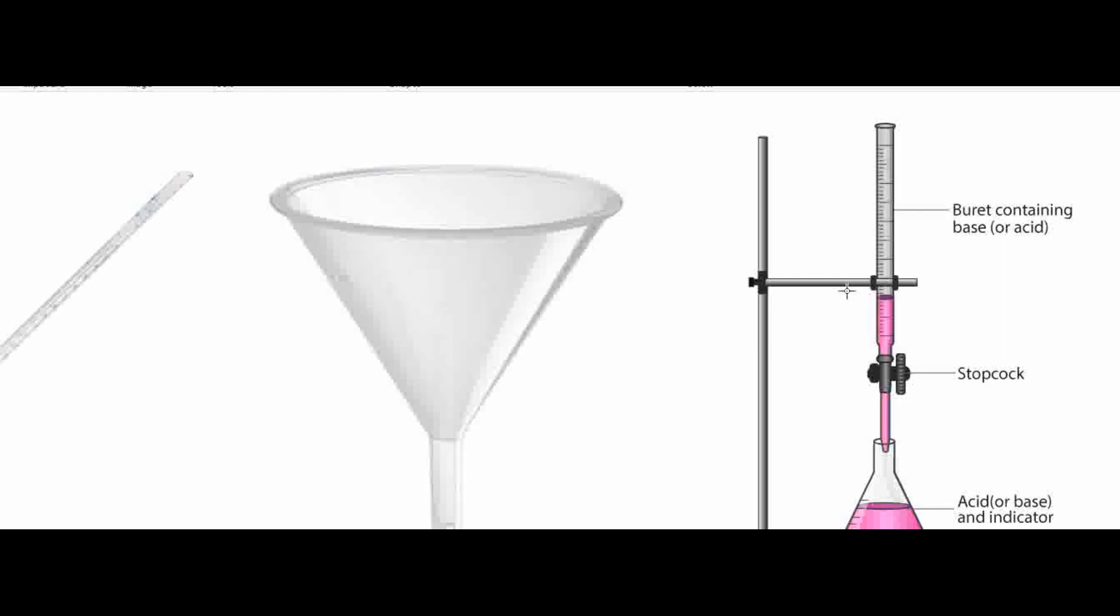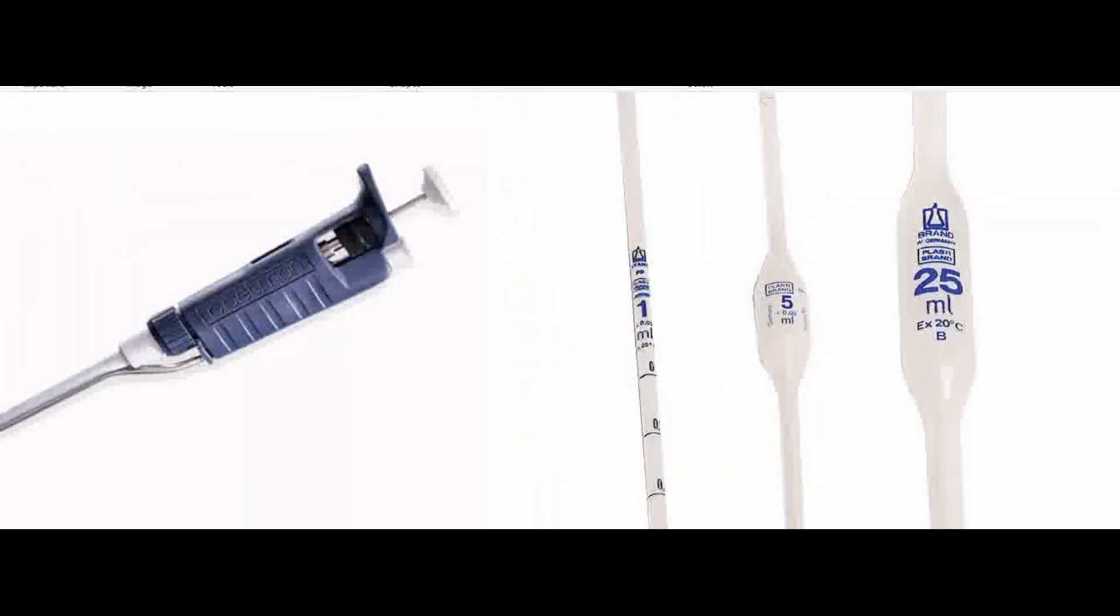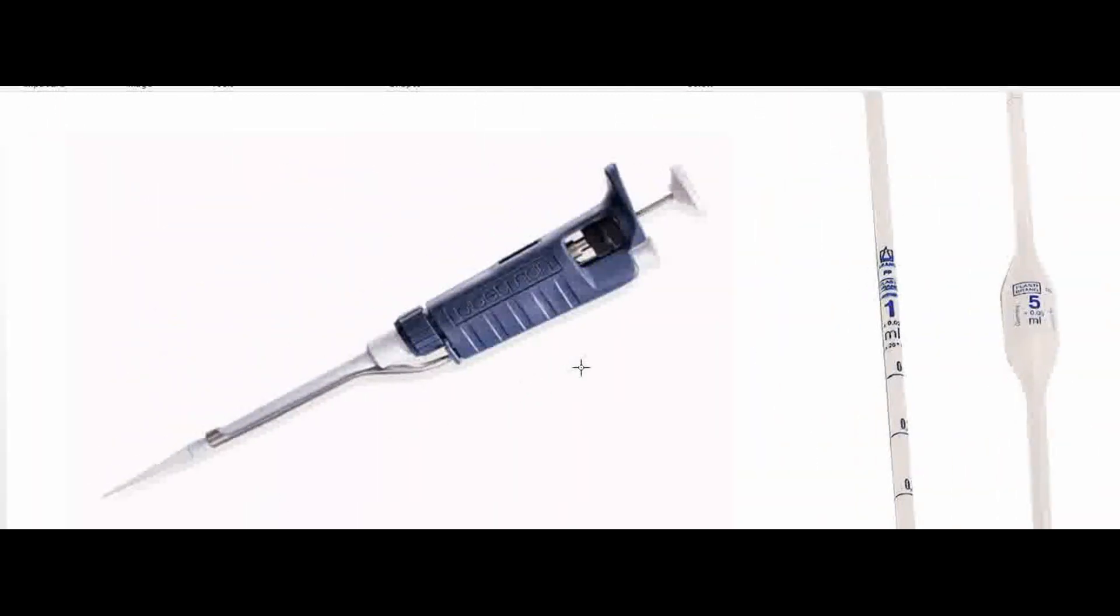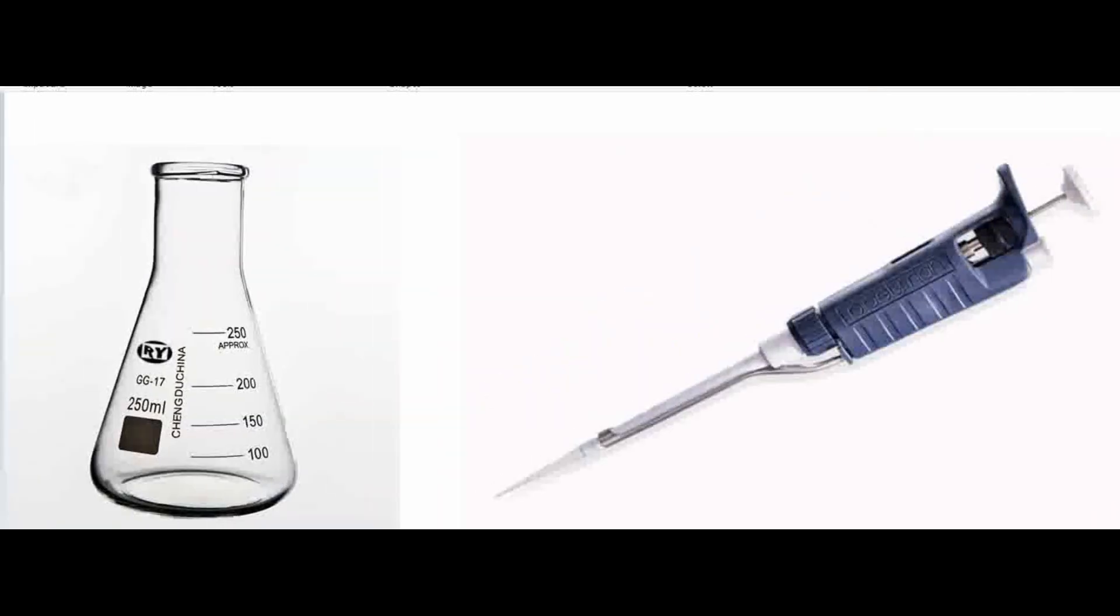Basically one solution would be in the burette and the other one would be in the conical flask. Let's say we were titrating sodium hydroxide with hydrochloric acid to find out the concentration of the hydrochloric acid. We would pipette 25 cm³ or 25 milliliters of the sodium hydroxide and place it in our Erlenmeyer flask. We would then add two drops of acid-base indicator which will change colors when the solution has neutralized so we would know when the endpoint is.